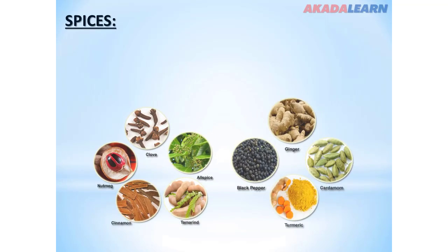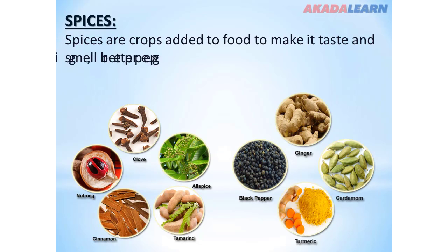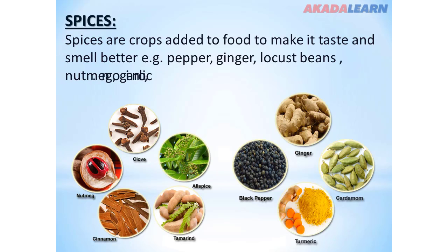Then we have spices. Spices are crops added to food to make it taste and smell better. Examples include pepper, ginger, locust beans, nutmeg, garlic, and onion.